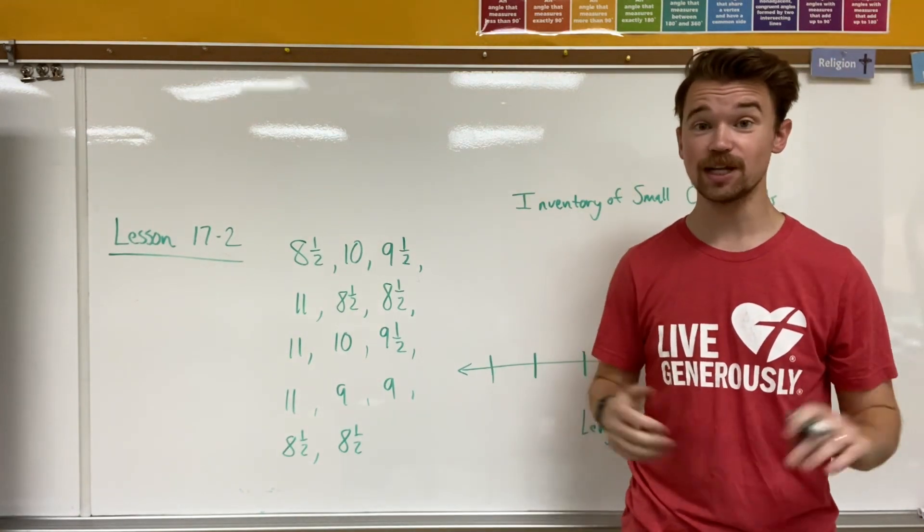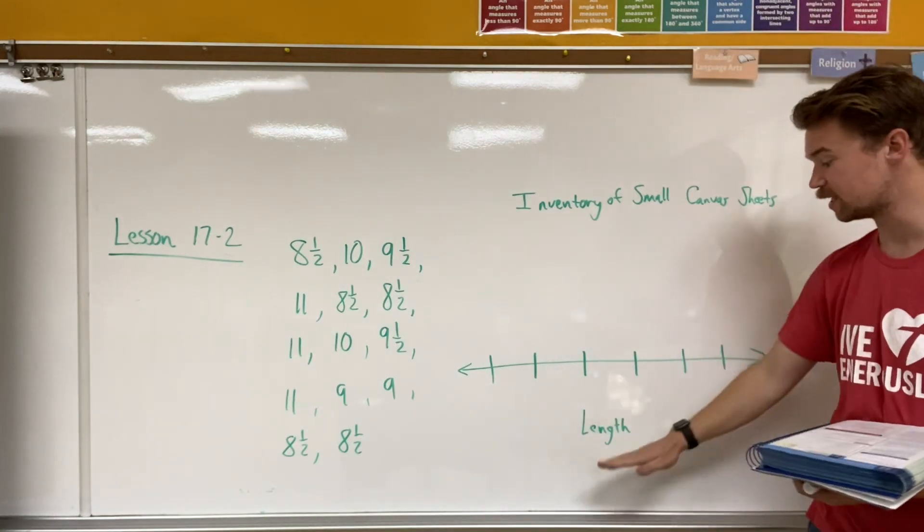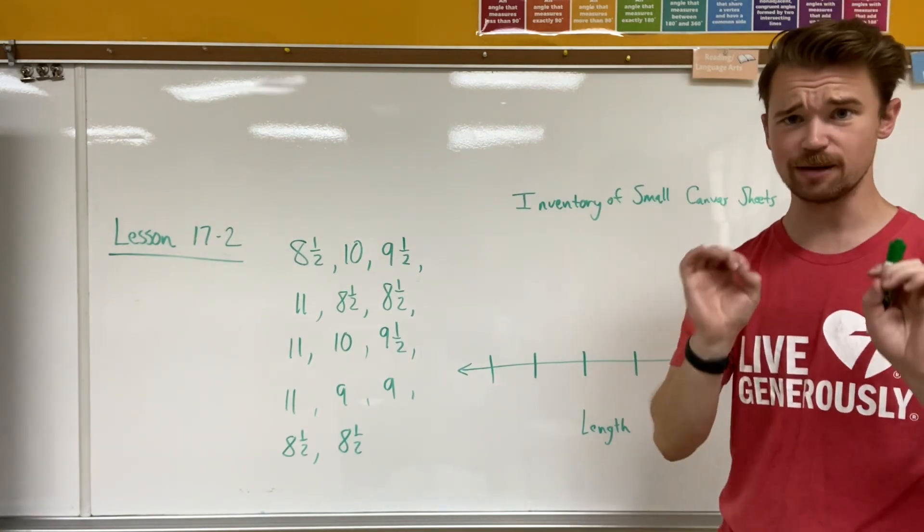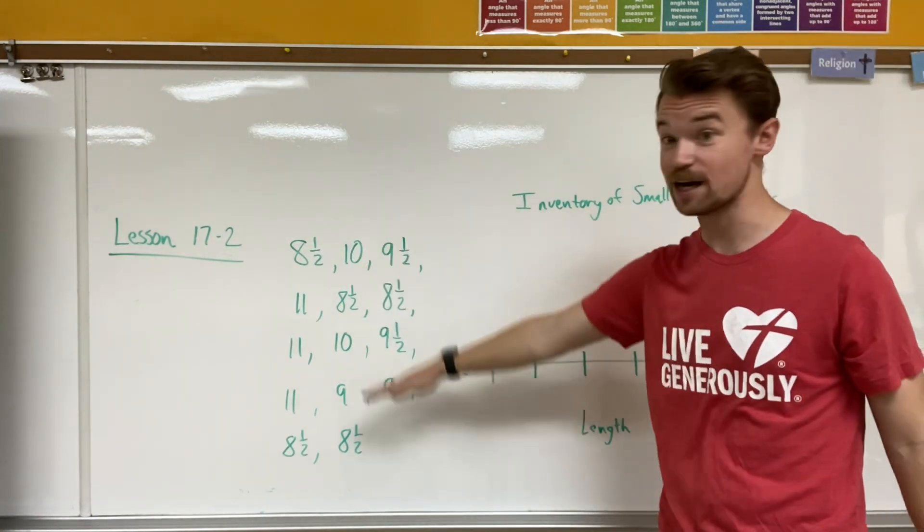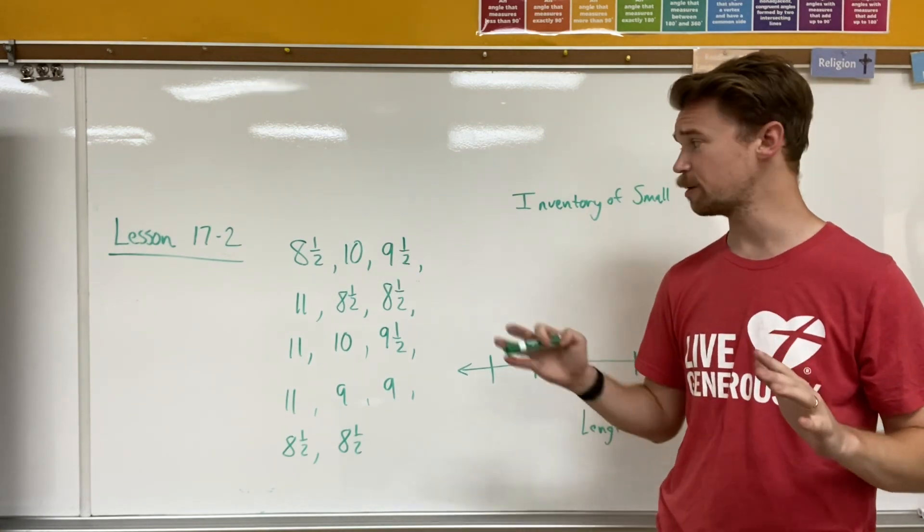And today we're going to be learning how line plots with fractions and mixed numbers work. Now, we worked with line plots last time. We talked about how last time Mr. Montgomery forgot to have a title and a label in his. And so we're going to make sure that we have those items specifically for today when we learn about fractions and whole numbers. So we worked with decimals yesterday, and so we're going to be working with fractions today.